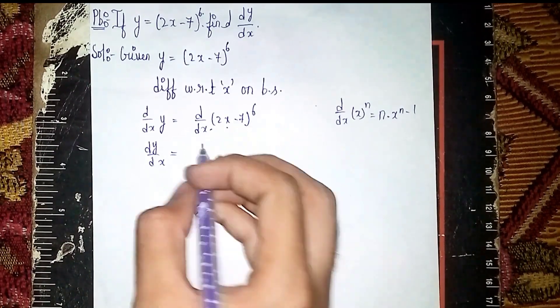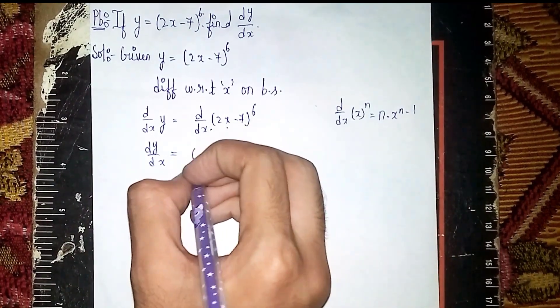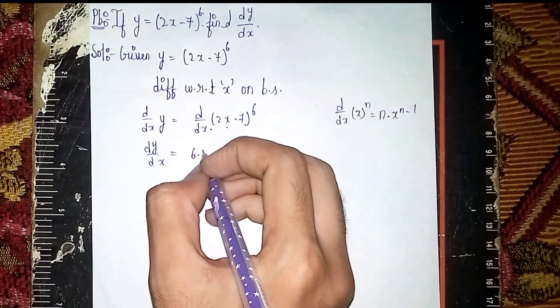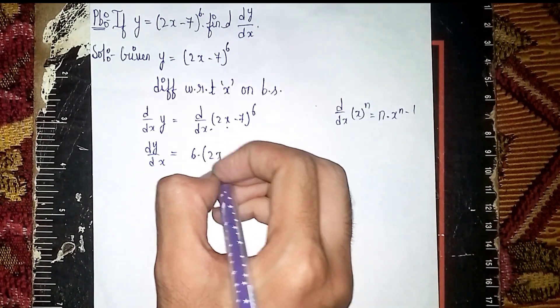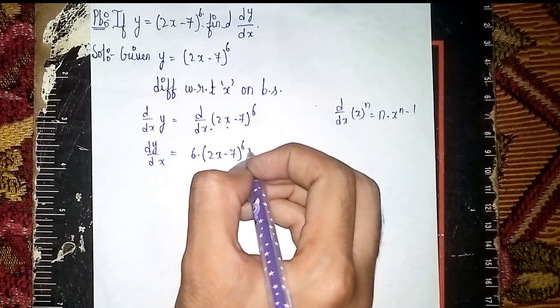Here this term will become - n is 6 - so 6·(2x - 7)^(6-1).